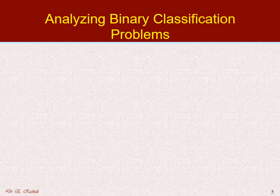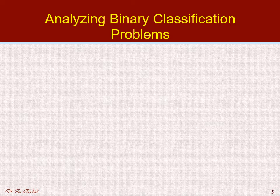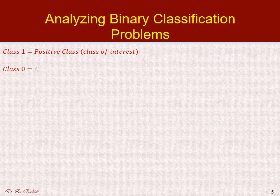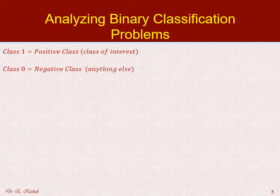Analyzing binary classification problems. In binary classification problems, we only have two classes: class one, also called the positive class, which is the class of interest, and class zero, called the negative class, which is anything else.